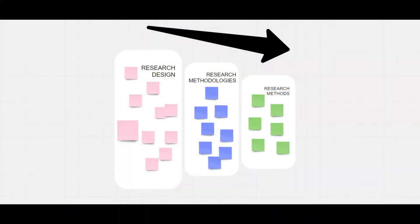For example, if you're doing ethnography, you're very likely to have observation as at least one of your methods, because you want to observe participants in their natural setting. To summarize: research design is the most inclusive and broadest term; within it there are research methodologies; and within methodologies there are research methods. I hope that helped clarify these terms. If it did, please like the video to help others find it, and if you'd be interested in personal support, you can read under the video about the private lessons I offer.